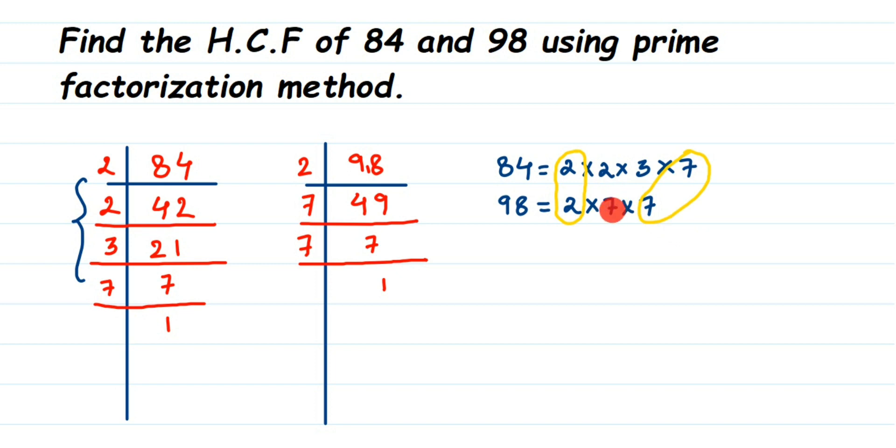So HCF is nothing but from each pair you take one factor. It's 2 × 7, multiply it, that's 14. So that's it - the HCF of 84 and 98 is 14.